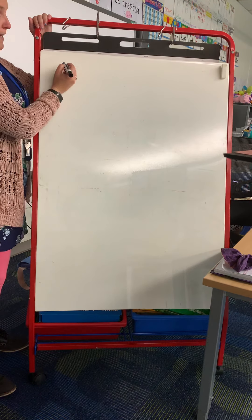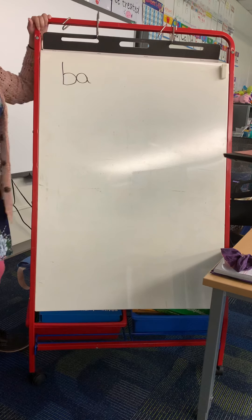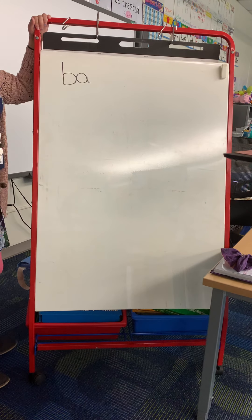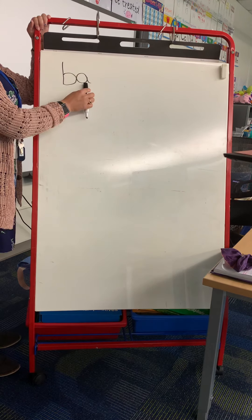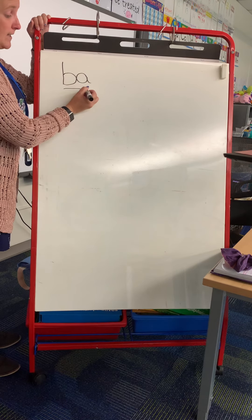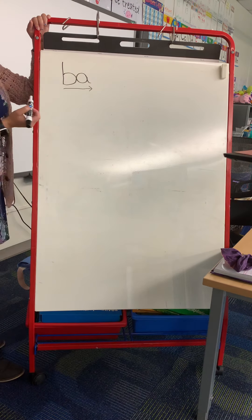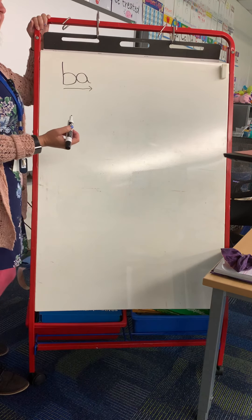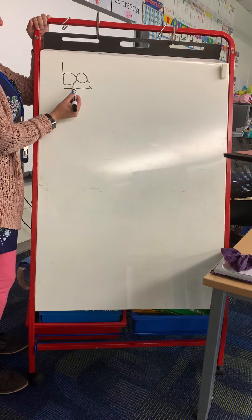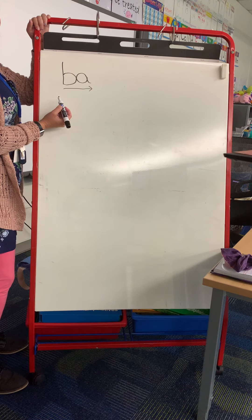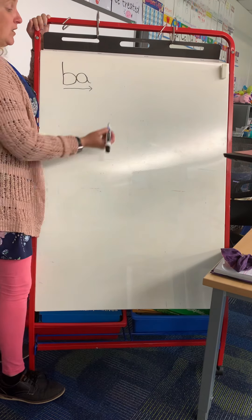Now that we've practiced our slide arrows, I want us to write two letters. The first letter is lowercase b and then lowercase a right next to it. When we write it without a slide, it is b, ah. When we make our slide under it, it becomes a new sound — it becomes bah. Think about being a sheep: bah, bah. That helps me remember my B-A. When I put my slide under it, it becomes bah.